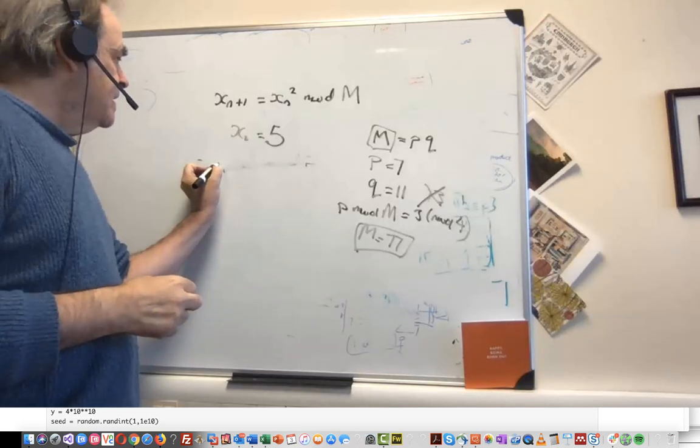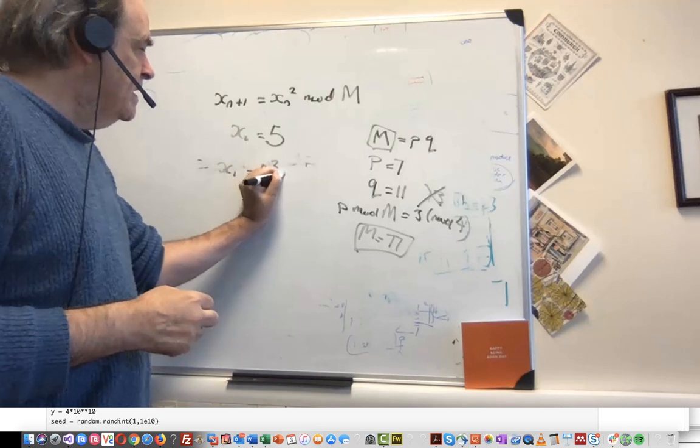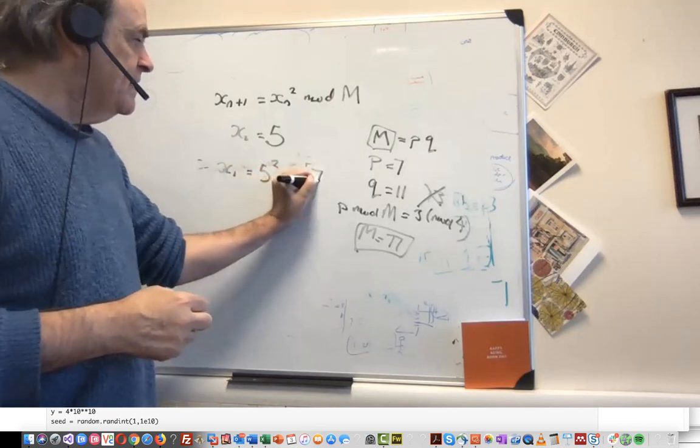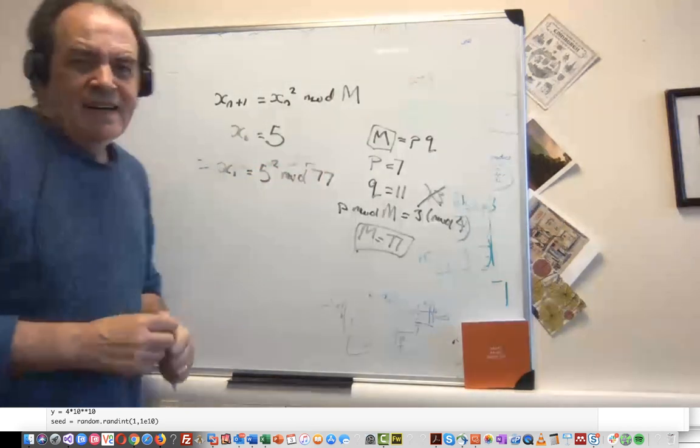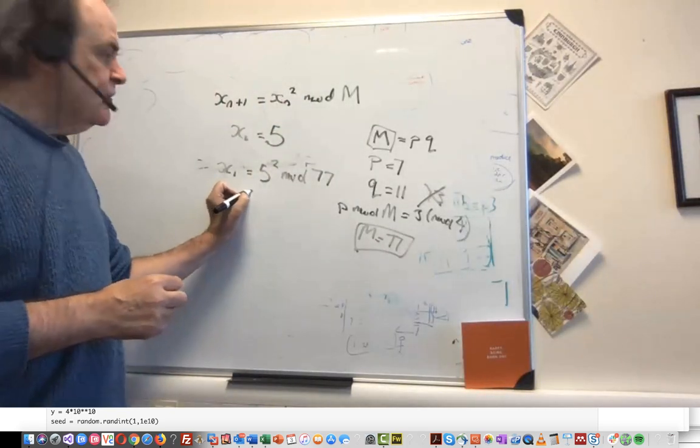So if we take x_1, then that is 5 squared mod 77, and the answer to that one is 25.